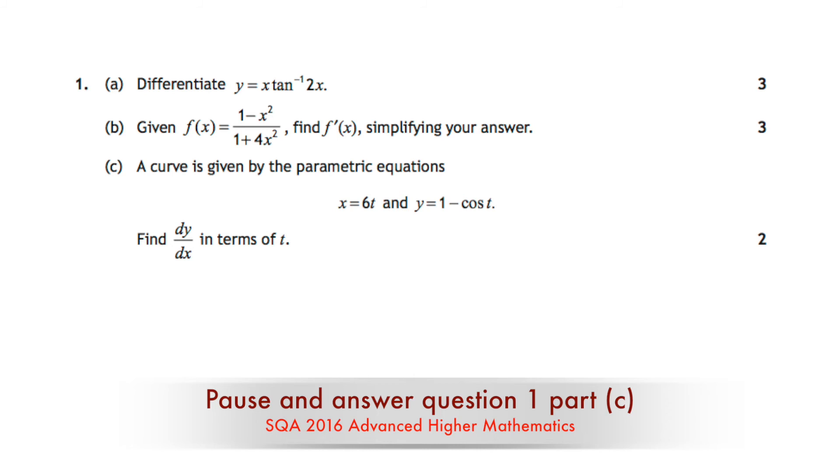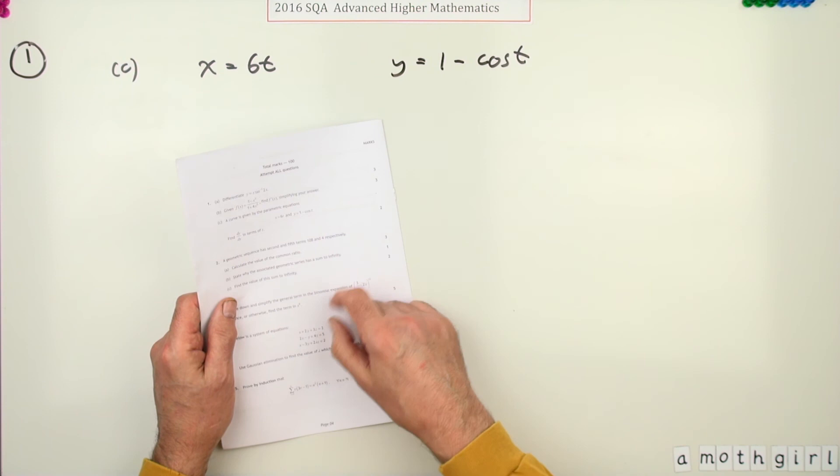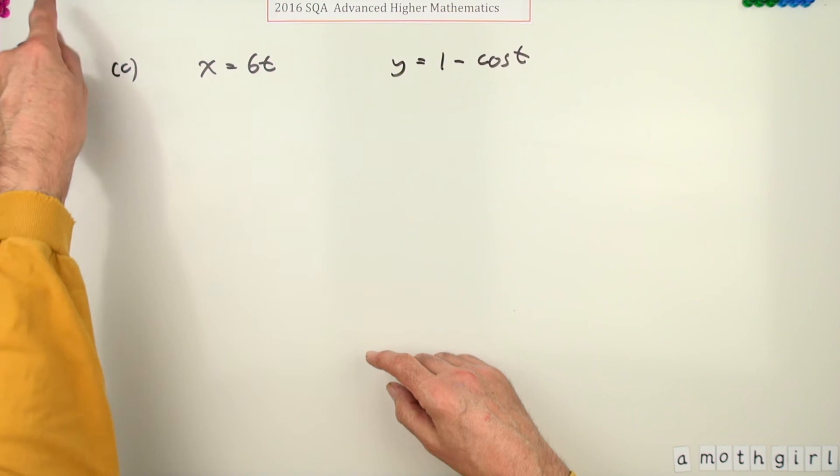Now part C, a curve is given by these two parametric equations. Find dy by dx in terms of t. This is only two marks, so these should be sparser than the previous ones, we've only got two marks left.